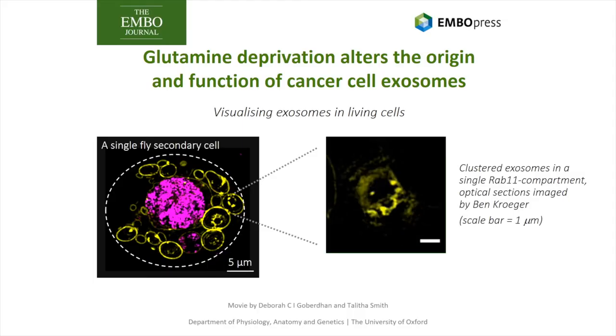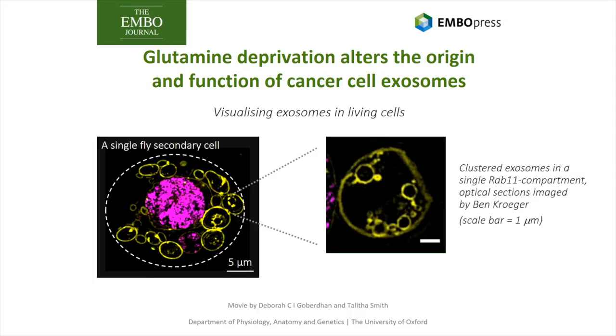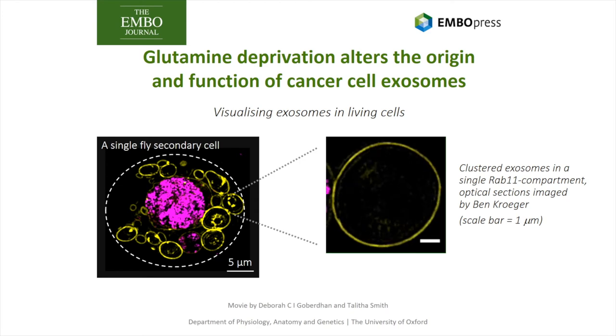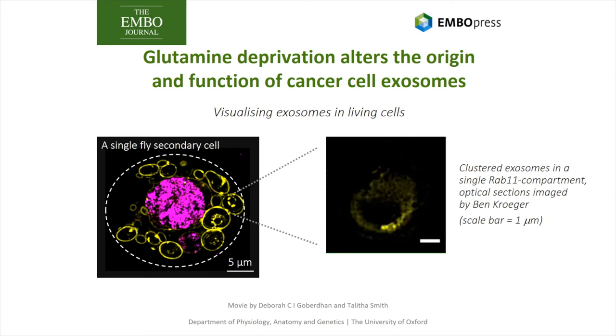So, in conclusion, the primary finding of our work is that there are at least two different types of exosome, one group made in late endosomes, and the other made in RAB11a marked recycling endosomes.